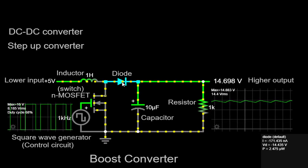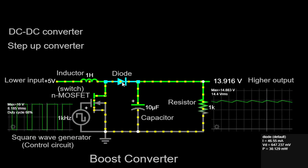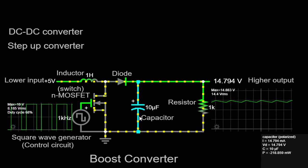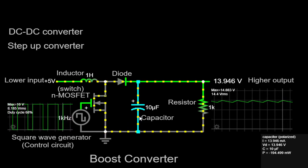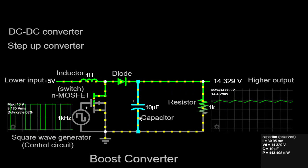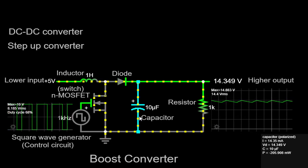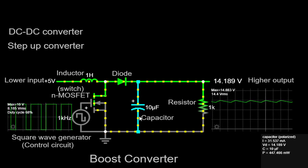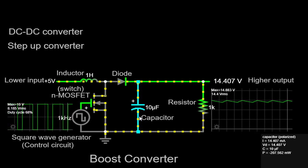To further enhance the output voltage quality, we have the capacitor connected in parallel with the diode. The capacitor acts as a storage element, helping to smoothen out the voltage waveform and reduce any ripples or fluctuations present. It acts as a buffer, ensuring a more stable and regulated output voltage.